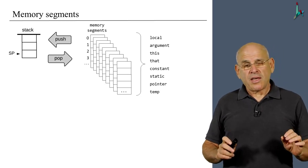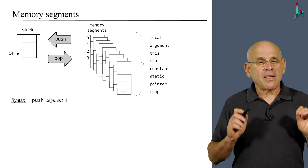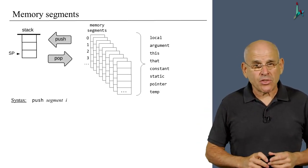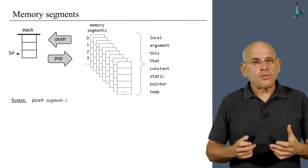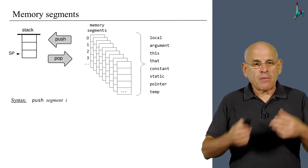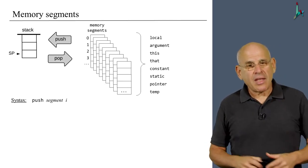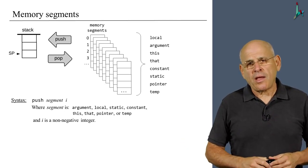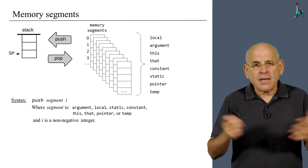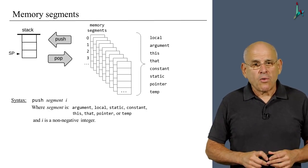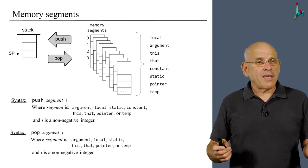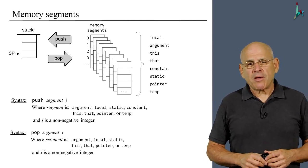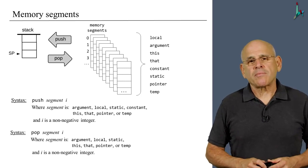You push a value into a memory segment by saying 'push [segment name] [index]', where segment can be any one of the eight segment names, and i is simply a non-negative constant. For pop, it's almost the same with the exception that you cannot pop into the constant segment, because it simply doesn't make any sense.